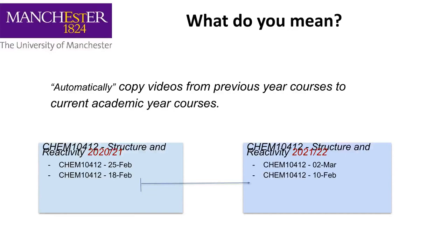By roll forward I mean copy videos — usually lecture videos — from a previous year's course to the current academic year, done automatically. We give the lecturer the choice to choose which lectures they want to copy from the previous year to this year. Here's an example: a chemistry course from last year, 2021. In OpenCast these are called series — a course is like a basket containing different videos, such as a video from 22nd February or 18th February.